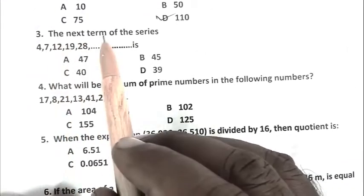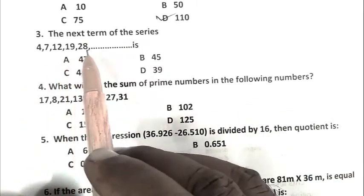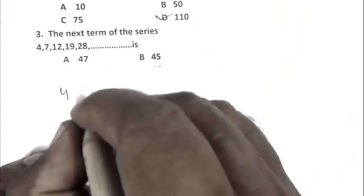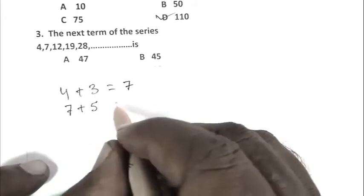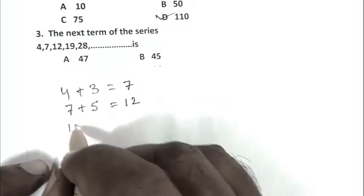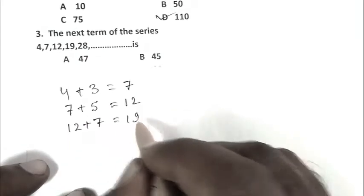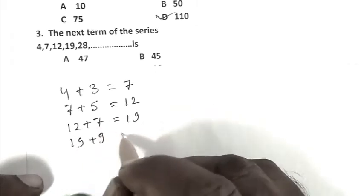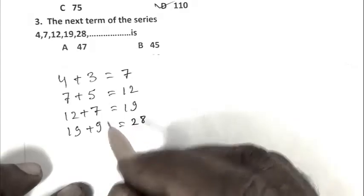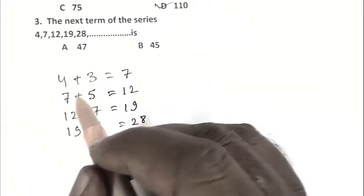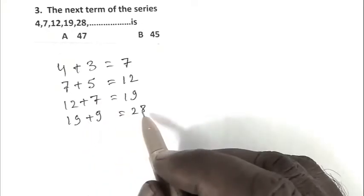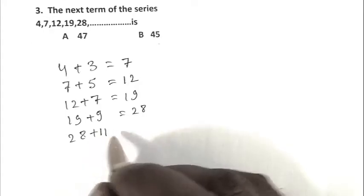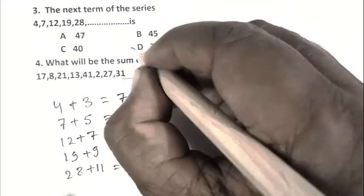Question number 3: The next term of the series 4, 7, 12, 19, 28. First term 4, if we add 3 we get second term 7. Add 5 to get third term 12. Add 7 to get 19. Add 9 to get 28. In the first term we add 3, second 5, third 7, fourth 9. After that we can add 11, so 28 plus 11 is 39. D is the right answer.